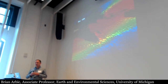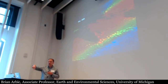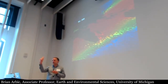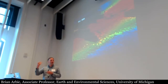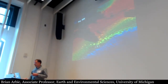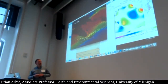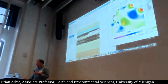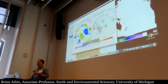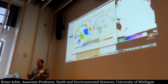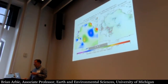Perhaps most of all, eddies are important for biological activity. If they're spinning one way, they pull nutrients up and give you a lot of productivity; if they're spinning the other way, no productivity. This is a model of what you call the atmospherically driven circulation, which is the most important circulation in the ocean. But even without winds and air-sea fluxes affecting density, you would still have another motion in the ocean: tides.